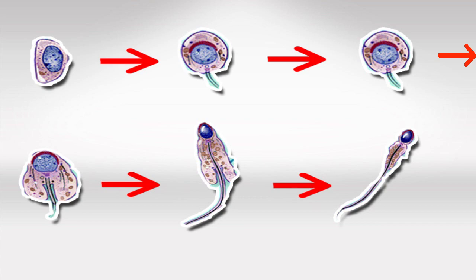So remember: in oogenesis we have three phases and only the first phase is diploid, and in spermatogenesis we have six phases and the first two phases are diploid.